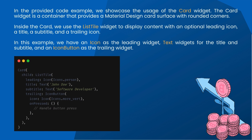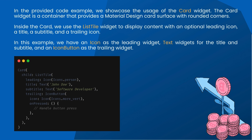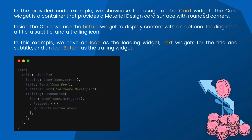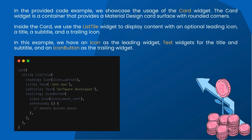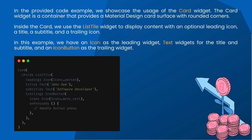In the provided code example, we showcase the usage of the Card widget. The Card widget is a container that provides a Material Design card surface with rounded corners. Inside the card, we use the ListTile widget to display content with an optional leading icon, a title, a subtitle, and a trailing icon. In this example, we have an icon as the leading widget, text widgets for the title and subtitle, and an icon button as the trailing widget.